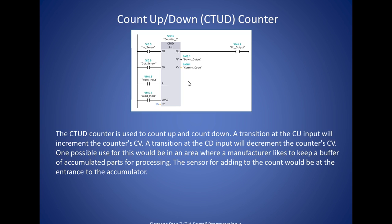An example of when this could be used would be if a manufacturer likes to keep a buffer of accumulated parts for processing. Then you'd have a sensor at the entrance and one at the exit of the accumulator. The sensor at the entrance would be connected to the count up input for the counter. And the sensor at the exit of the accumulator would be connected to the countdown input for the counter. And in that way, the system could keep track of how many parts are in the buffer for processing.